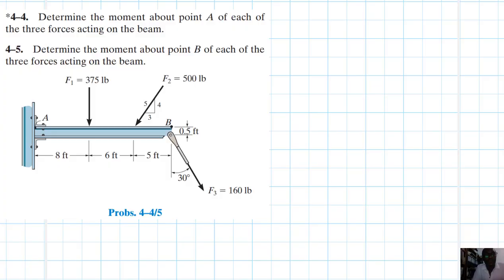Hello, I welcome you all. The problem reads: determine the moment about point A of each of the three forces acting on the beam, and in the second case, determine the moment about point B of each of the three forces acting on the beam. Both these problems are from Engineering Mechanics Statics, 13th edition by Hibbeler.